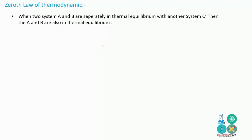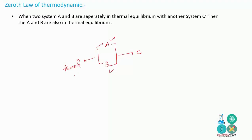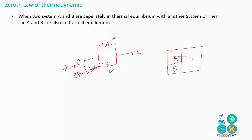The Zeroth Law of Thermodynamics states that when two systems A and B are separately in thermal equilibrium with another system C, then A and B are also in thermal equilibrium with each other. If system A and system B are both separately in thermal equilibrium with system C, then both systems are in thermal equilibrium.